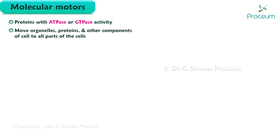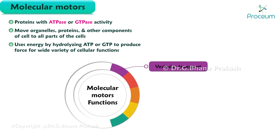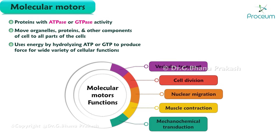Molecular motors are cellular proteins. They use energy by hydrolyzing ATP or GTP to produce force for a wide variety of cellular functions, like movement in a wide variety of cellular processes, including vesicular transport, cell division, nuclear migration, muscle contraction, and mechanochemical transduction.